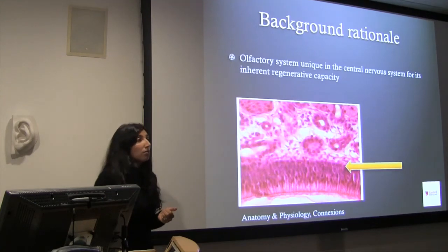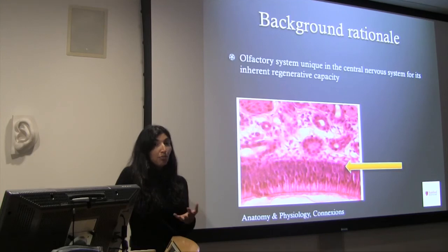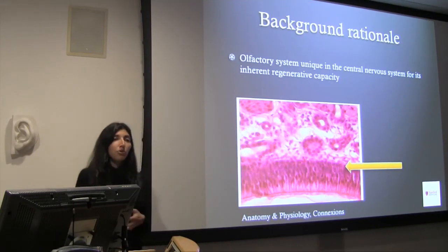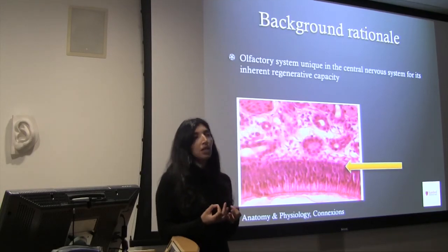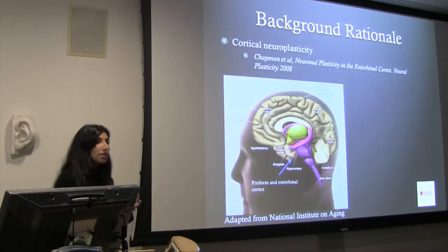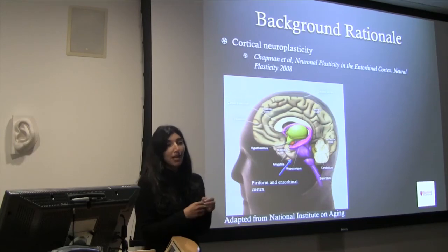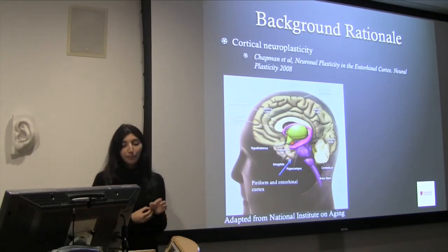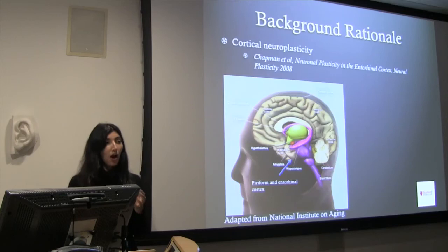The rationale: we know that olfactory nerves are unique among cranial nerves in that they have the inherent ability to regenerate — probably regenerating throughout life. When we get an insult so great that we can no longer regenerate, we're trying to stimulate those basal cells in the olfactory epithelium to regenerate new olfactory receptor neurons. We also know the cortex — where those second-order neurons synapse — has neuroplasticity. We can see changes in it over time, and introducing new smells to a patient will change that area.